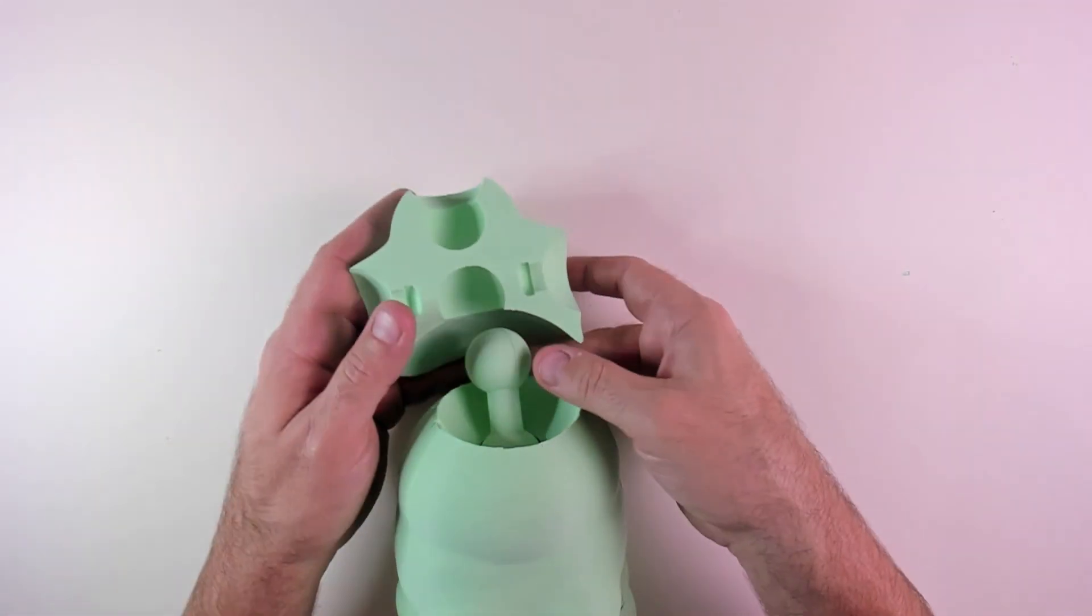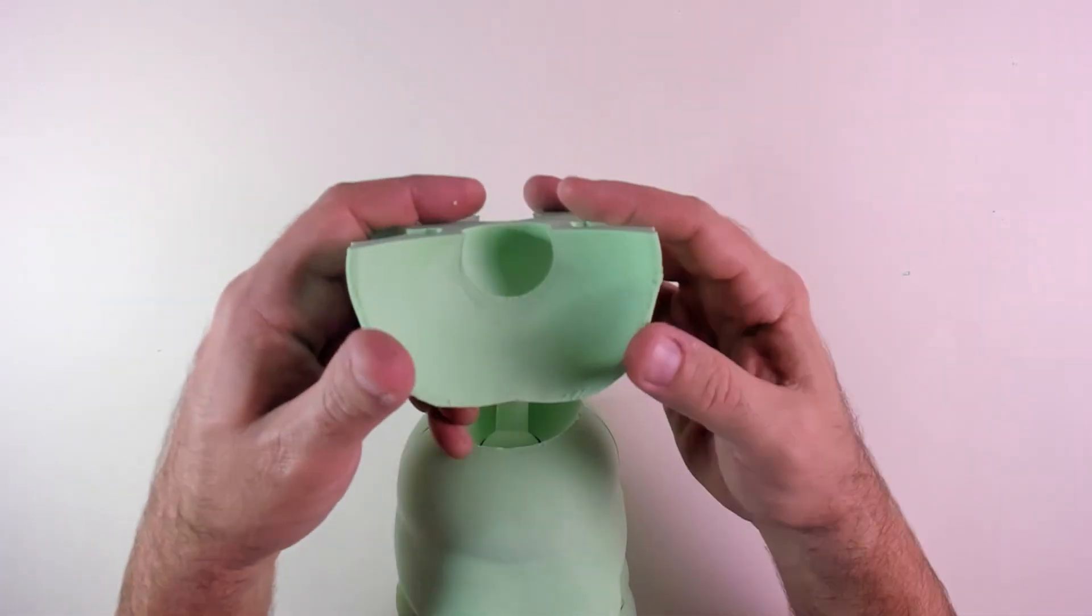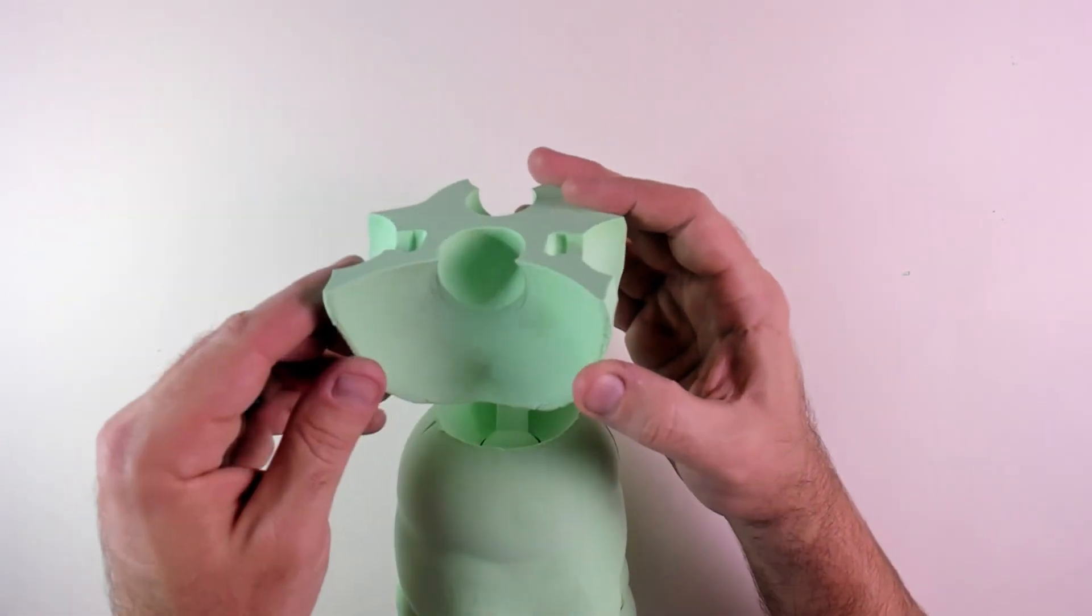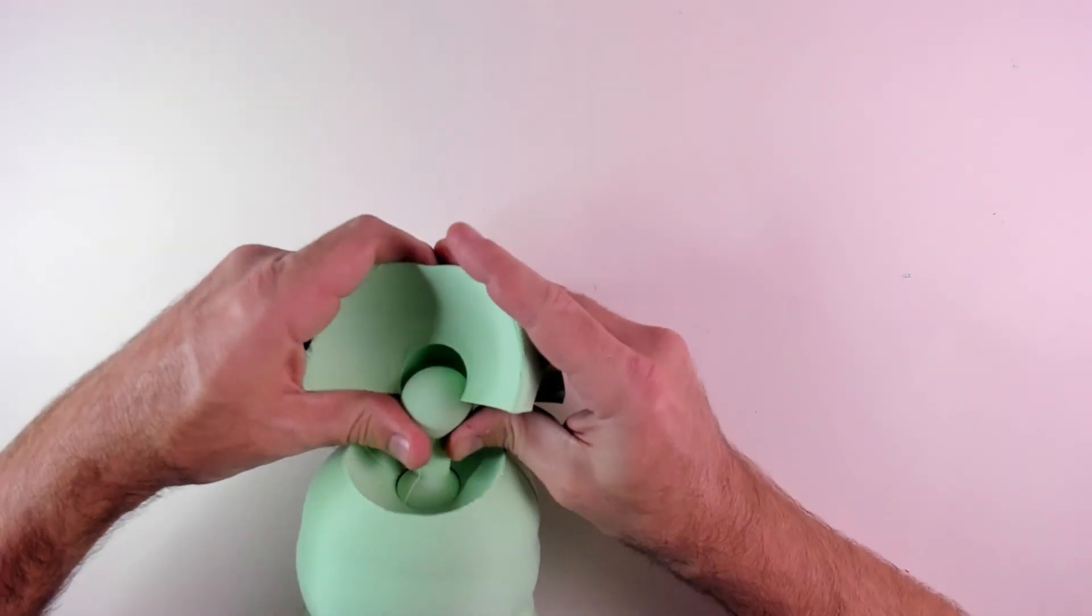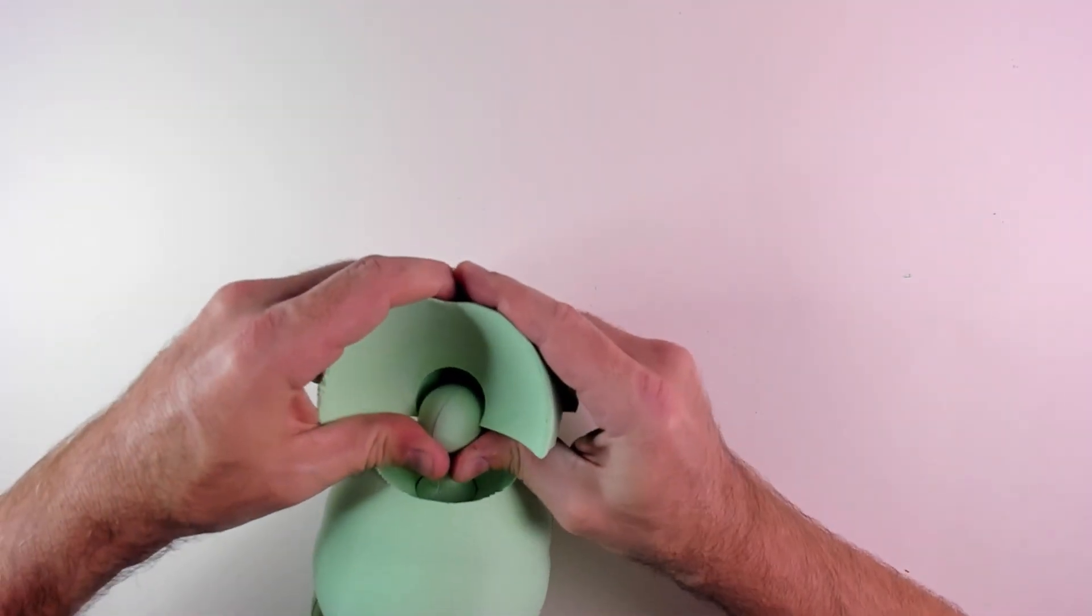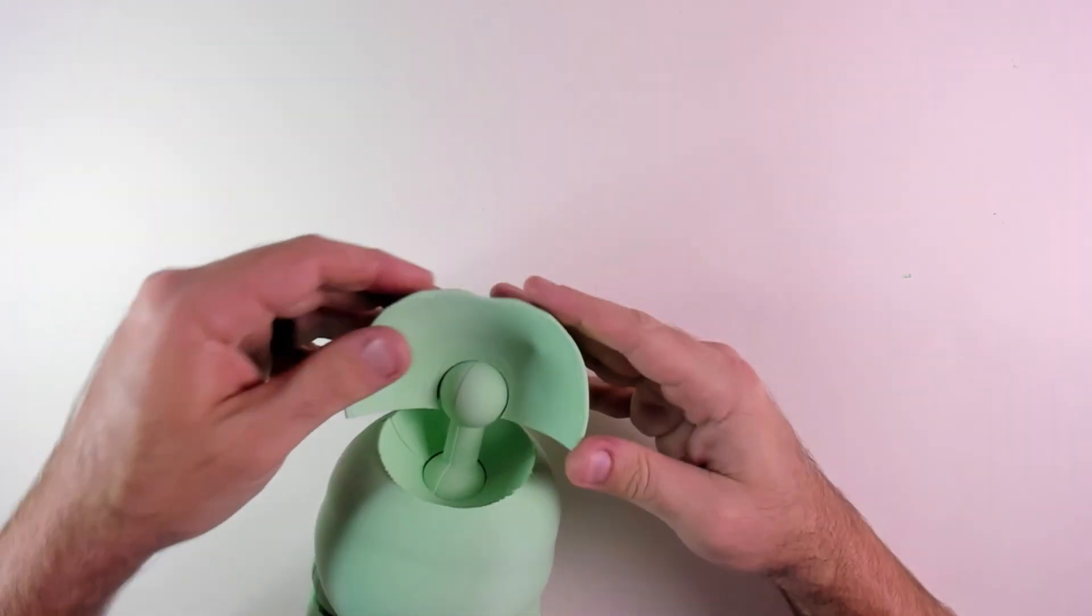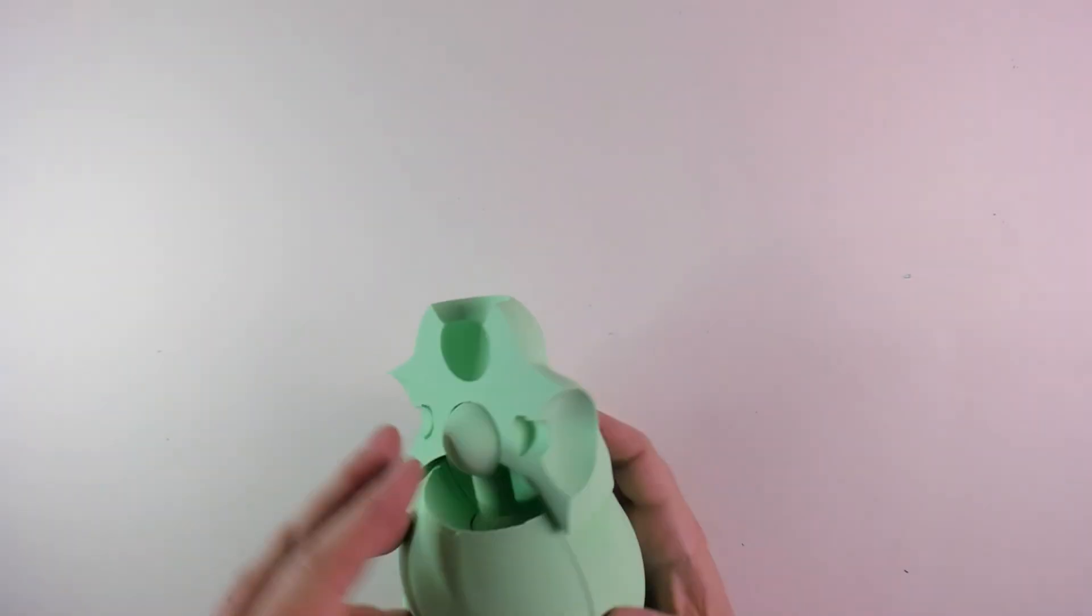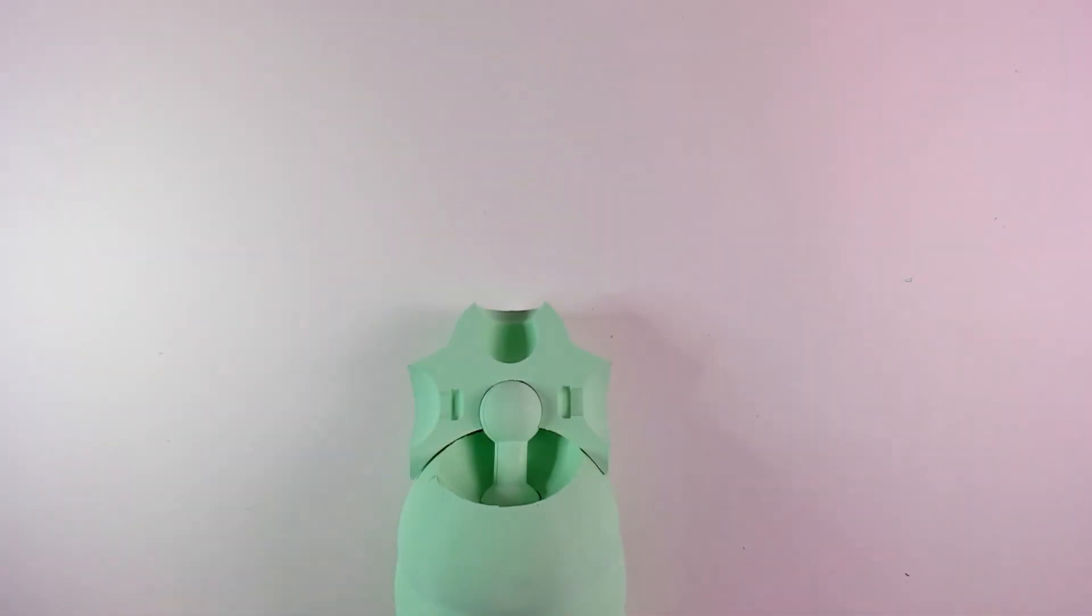Now it's time to add the upper body. Start with the front because of the placement of the barbell. I push it in at a 90 degree angle. You will need to use a bit of force to get it to snap in.